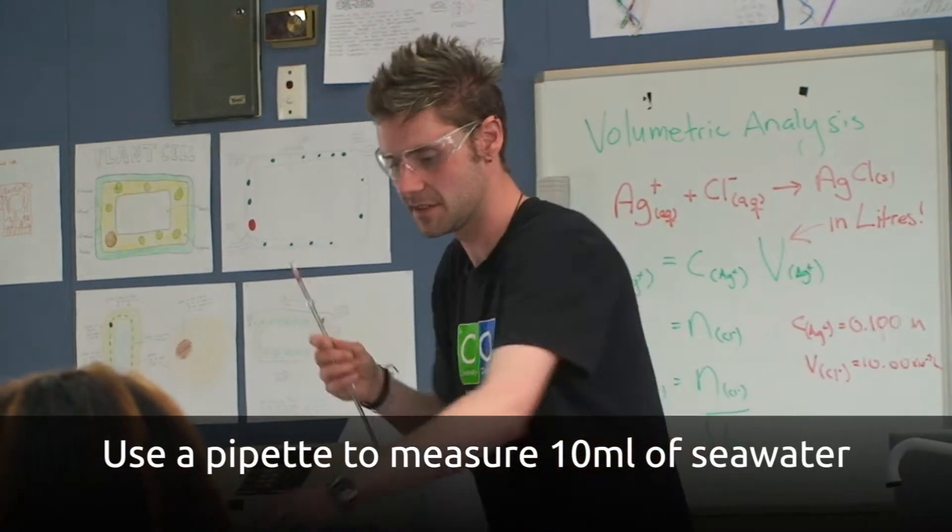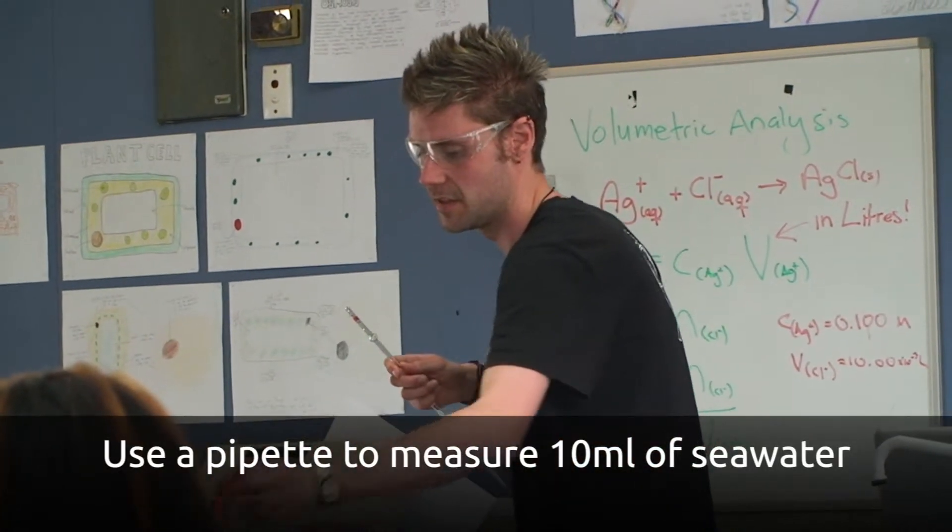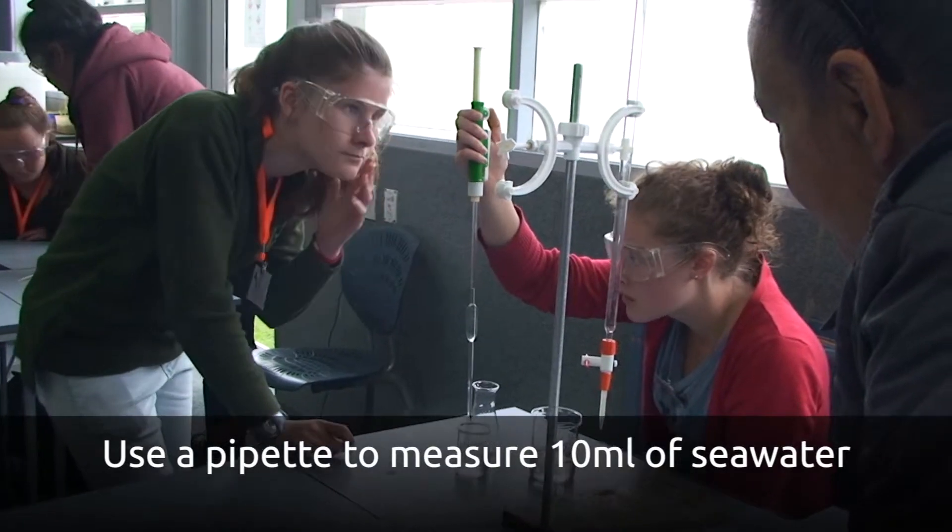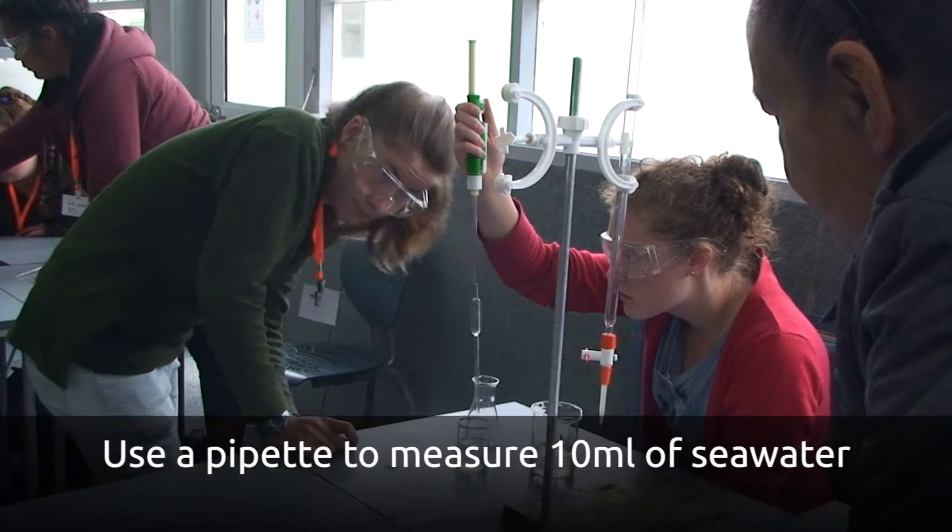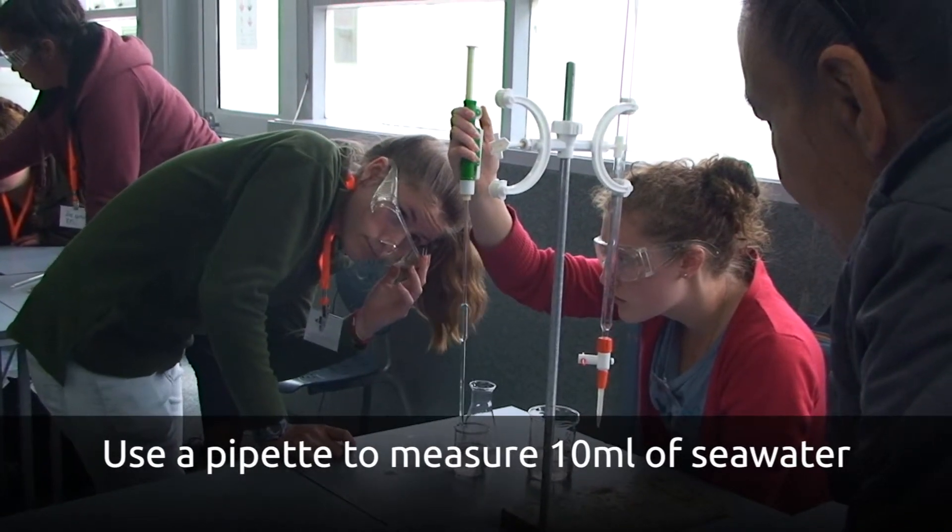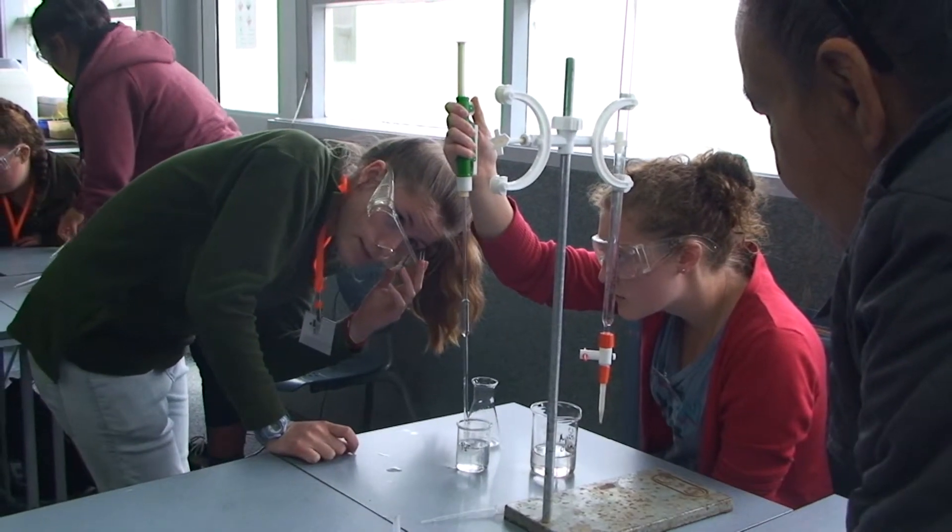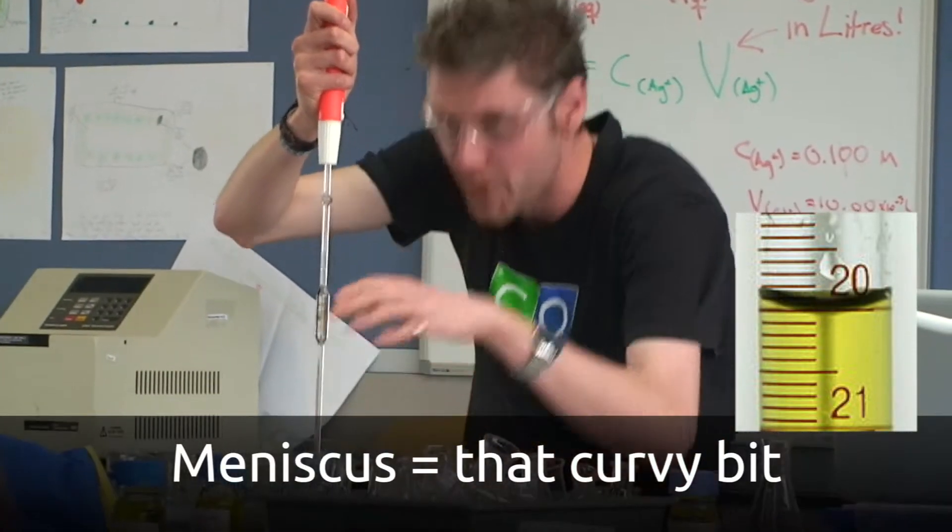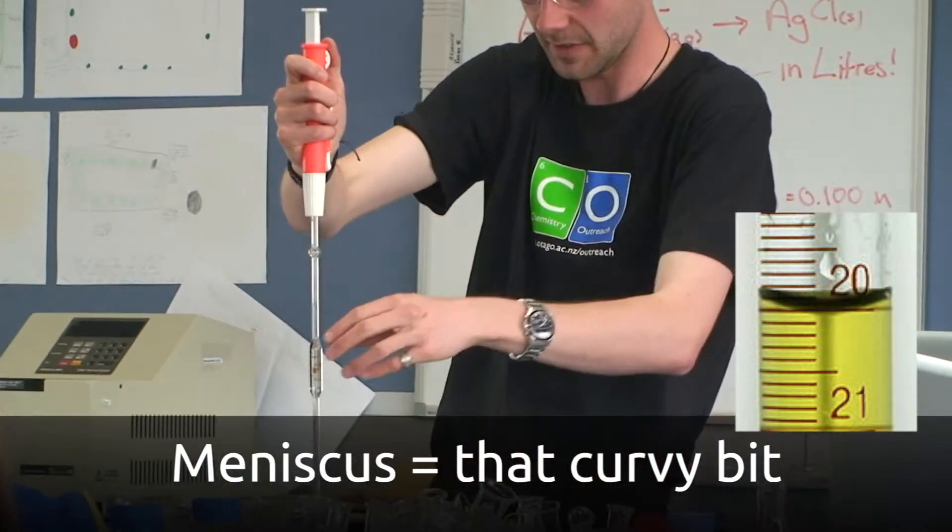And the way it fills all these up is with this nifty contraption known as a pipette filler. A pipette filler. It has a line, kind of like a measuring jug, and you fill it up so the bottom of the meniscus, that curvy bit, is on that line.